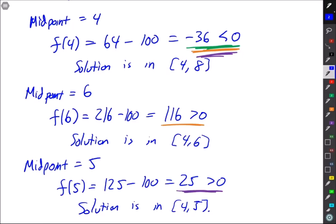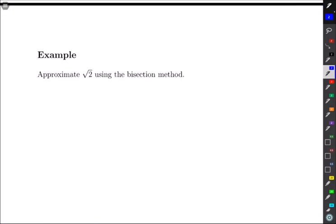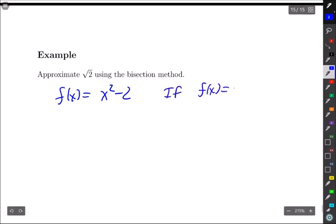So one other example of this. Approximate √2 using the bisection method. So in this case I first need to come up with a polynomial or a function that lets me get to this answer. So I'm going to take f(x) to be x² - 2. Nice and easy. And if f(x) equals 0, x is plus or minus √2. So as long as I'm at a positive number we'll be okay.